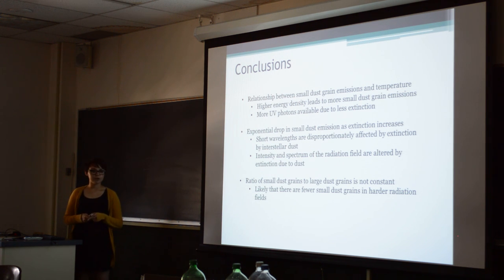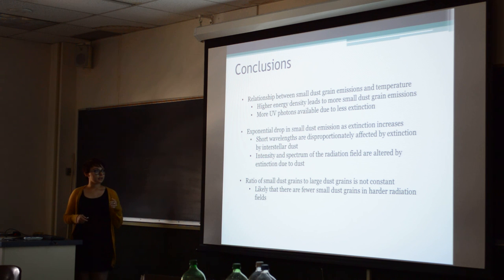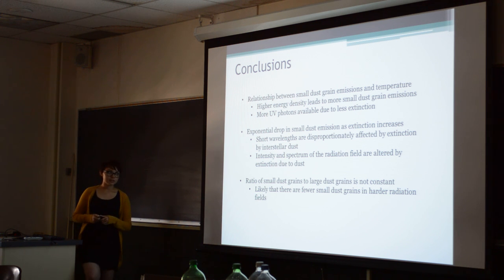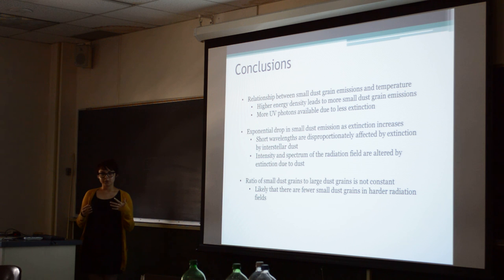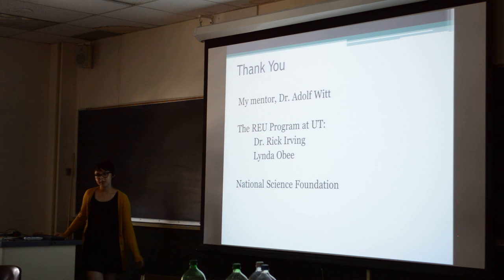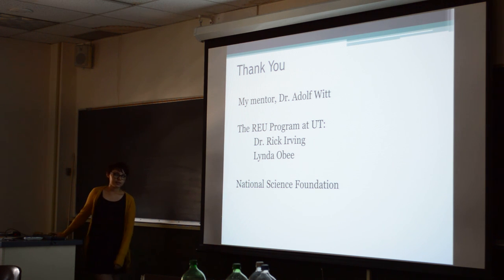Our main conclusions are that as we see energy density changing, we also see the spectrum changing. This is verified when we look at extinction and see that it's changing how the light is reddened. And finally, the small to large dust grain ratio is not constant. The main takeaway is that, unlike in the first model where only radiation density was changing, the spectrum is also changing and the number of small to large dust grains is changing — the real world is a lot more complicated than the model would suggest. I'd like to thank my mentor Dr. Adolf Witt, the REU program at the University of Toledo, especially Rick and Linda, and the National Science Foundation for funding my project.